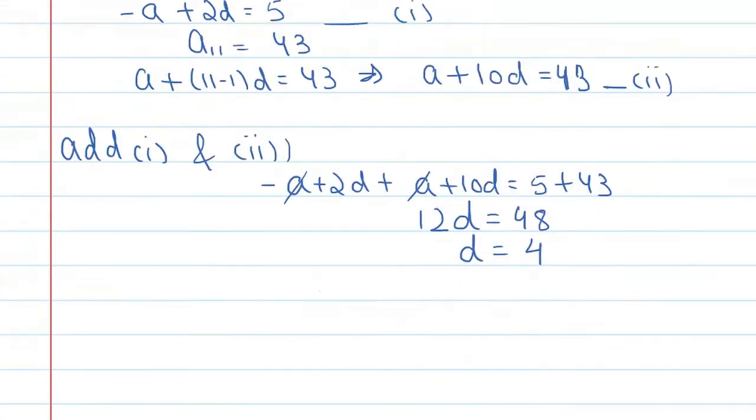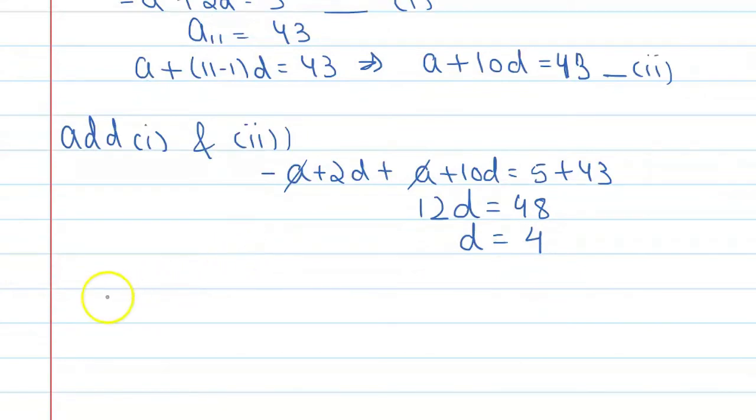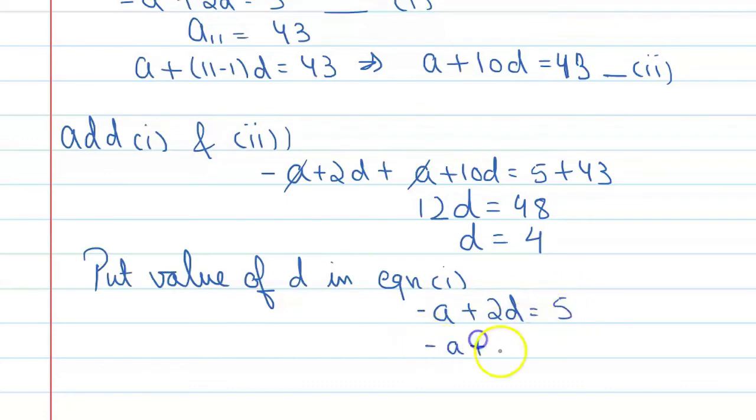Now put the value of D in equation number 1. One equation is minus A plus 2D equal to 5. So minus A plus 2 into 4 equal to 5.